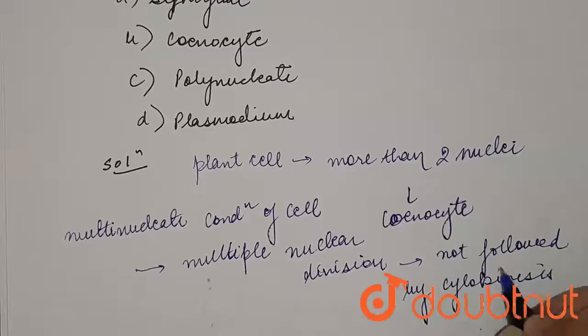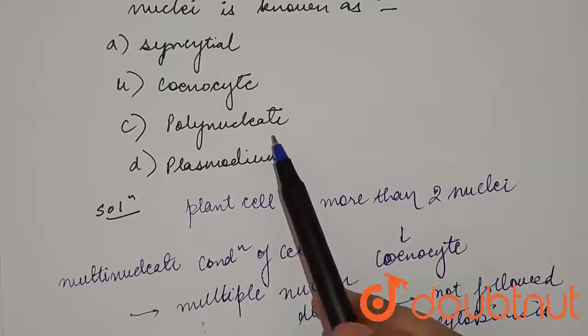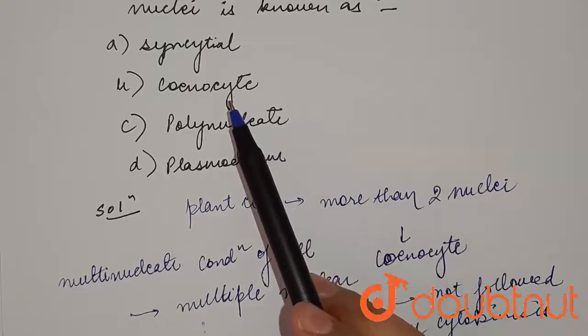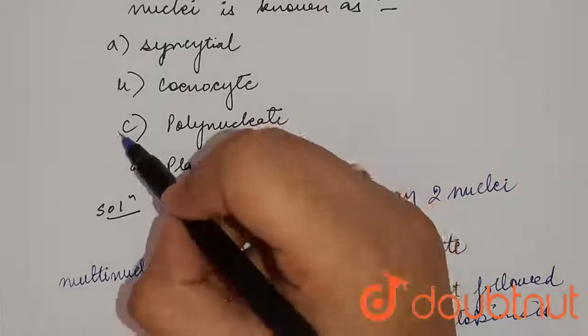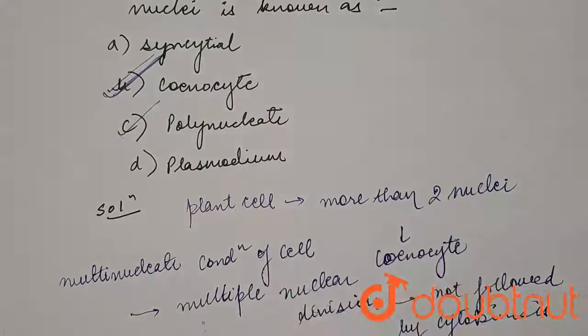So students, our answer to the question is option b: coenocyte. Polynucleate means more than three, syncytial means these are fused. So our answer to the question is option b. Answer is option b.